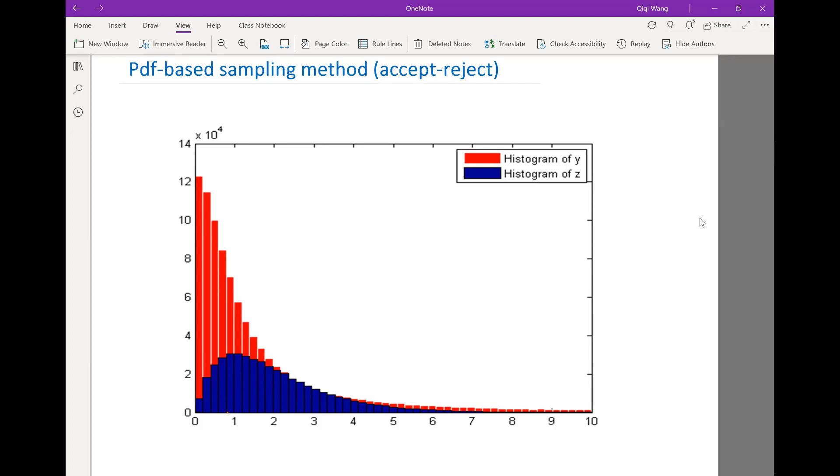And we accept the sample if that random number is below the height of the blue PDF. We reject the sample if the random variable is higher than the height of the blue PDF.